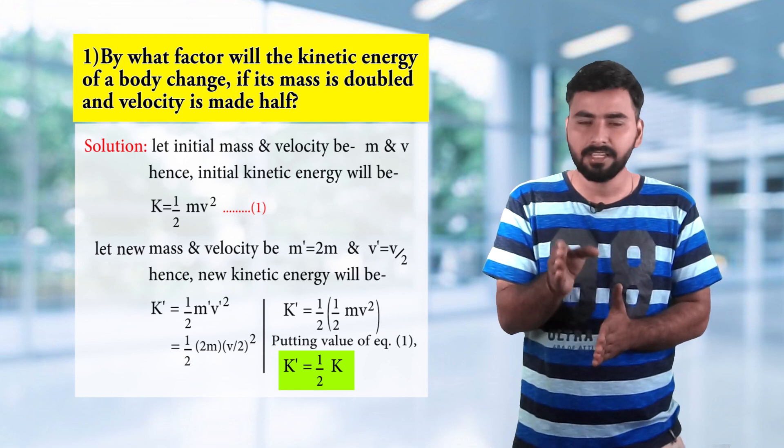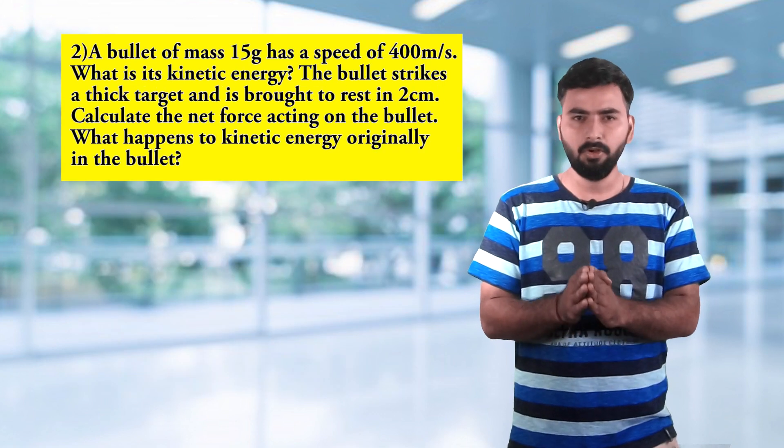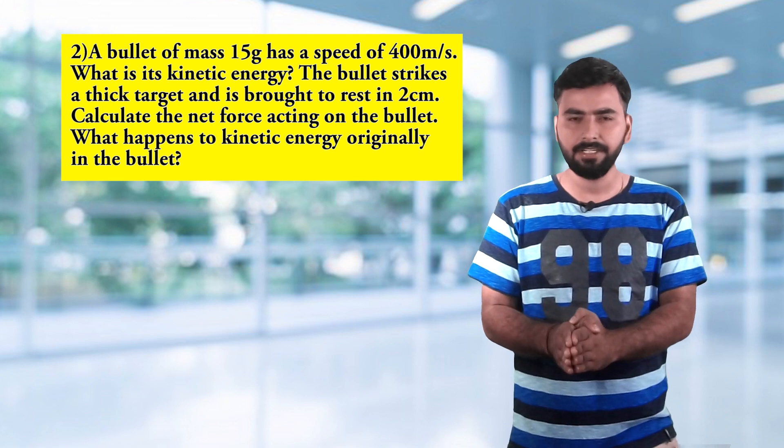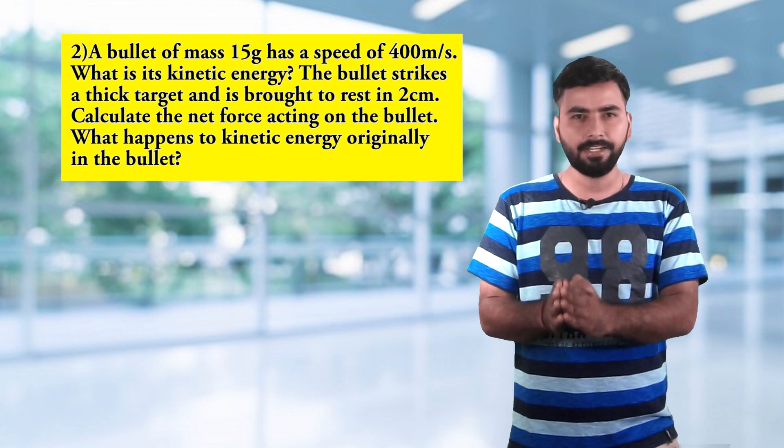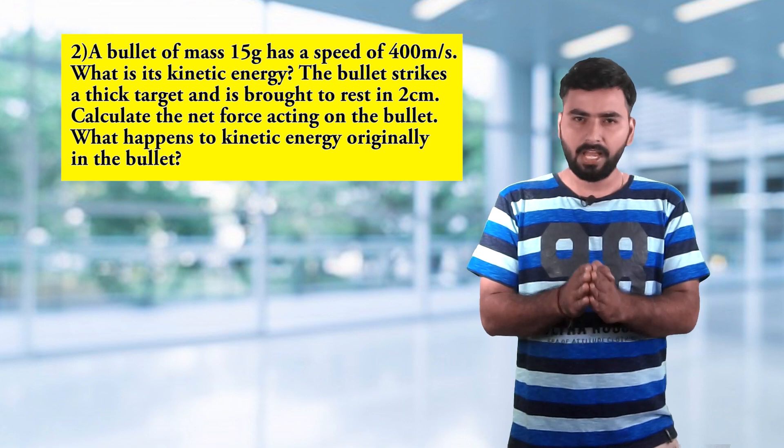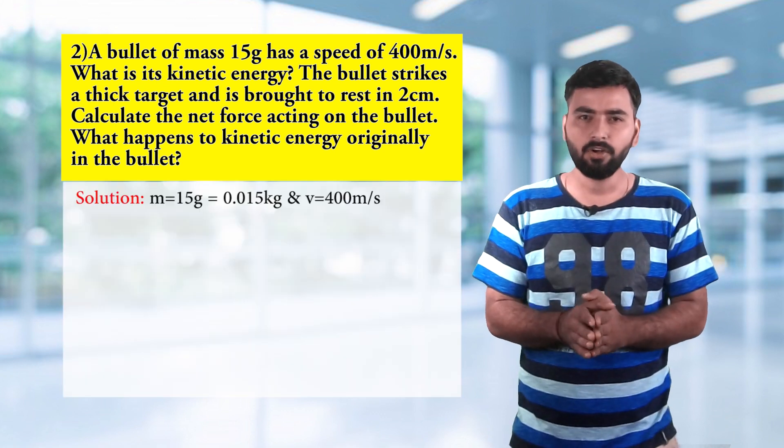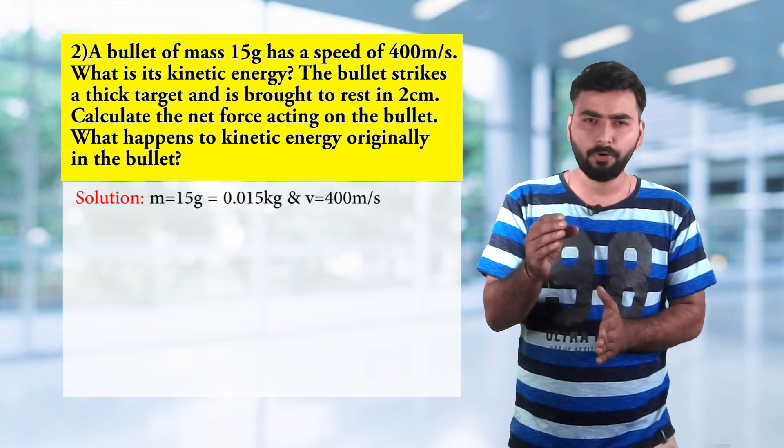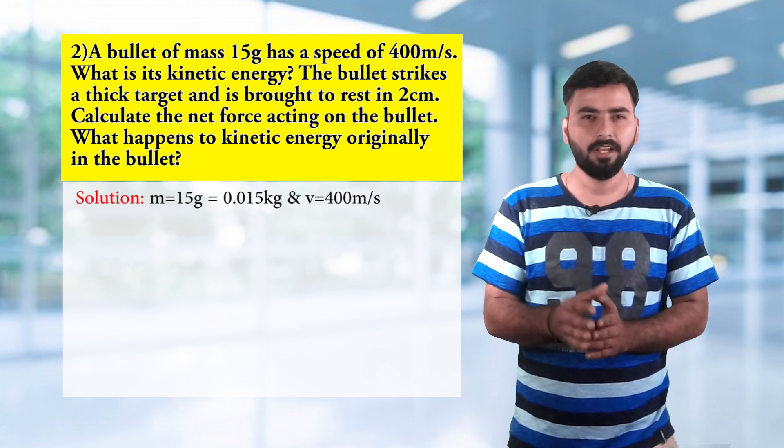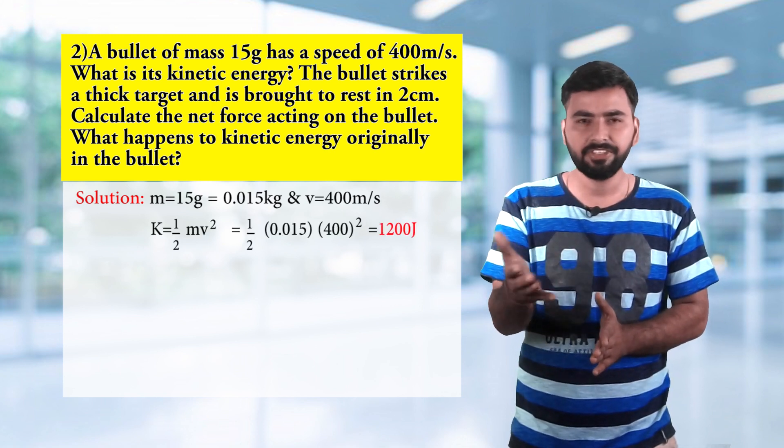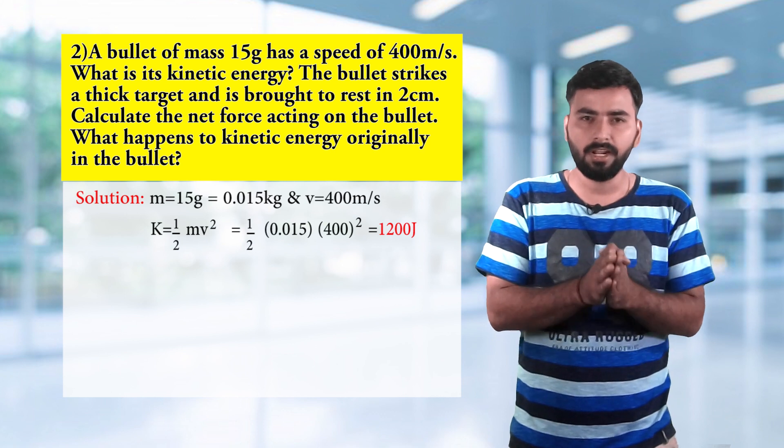The second question is: a bullet of mass 15 gram moving with a velocity of 400 meter per second, what is its kinetic energy? The bullet strikes a stationary target and is brought to rest in 2 centimeter. Calculate the net force acting on the bullet, and what happens to the original kinetic energy of the bullet. We have mass 15 gram, that is 0.015 kg, and velocity 400 meter per second. Kinetic energy will be half mv square, that is half of 0.015 into 400 square, which equals 1200 joule.